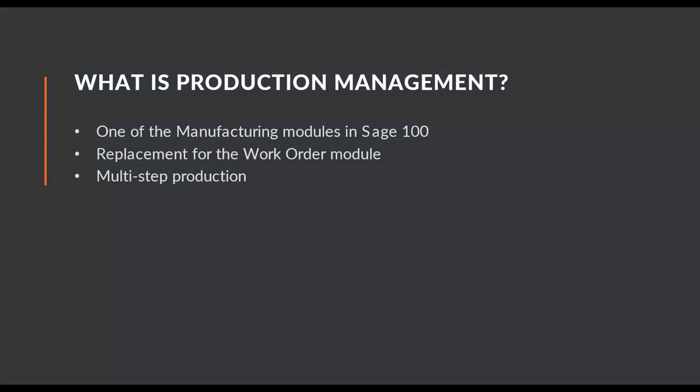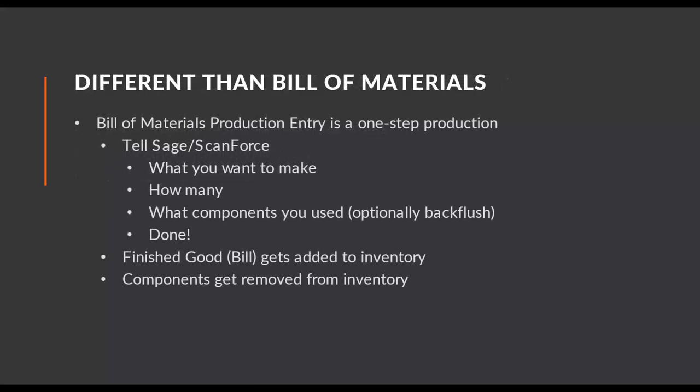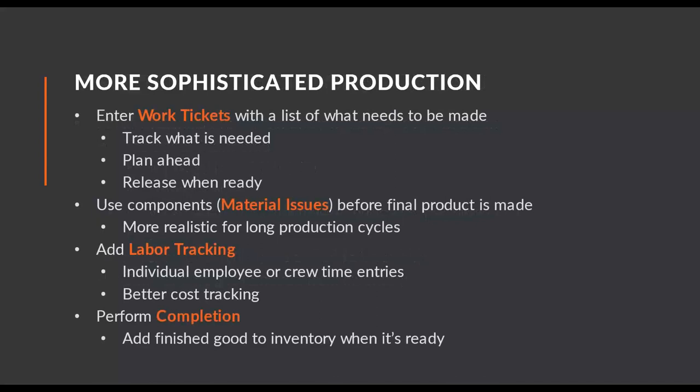For those new to Sage 100 manufacturing: production management is a module that is the replacement for the legacy work order module. It allows multi-step production tied to a work ticket. Bill of materials is a one-step, assembly-style production — indicate what you want to make, how many, enter the components, and you're done; the finished product goes right into inventory. Production management is more sophisticated: you have a work ticket, can plan ahead, release when ready, use components before the finished product is recorded in inventory, and track labor against what you're making for better cost tracking.